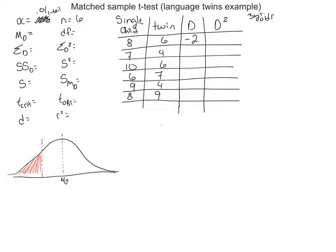For the second matched pair, the single child had 7 and the twin had 4. With matched samples, we match on one variable — in this case, age — and look at the difference on another variable: single child versus twin. Then 10 to 6 is a drop of 4; 6 to 7 is an increase of 1; 9 to 4 is a drop of 5; and 8 to 9 is an increase of 1.